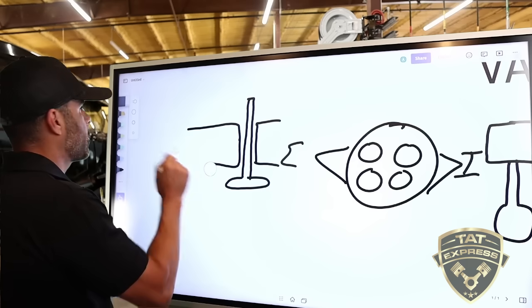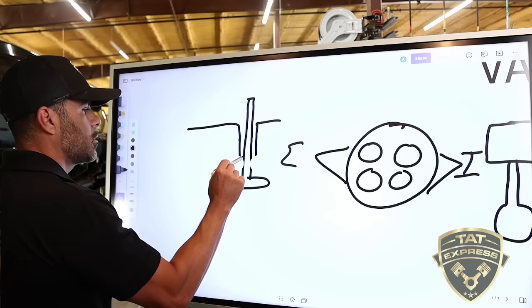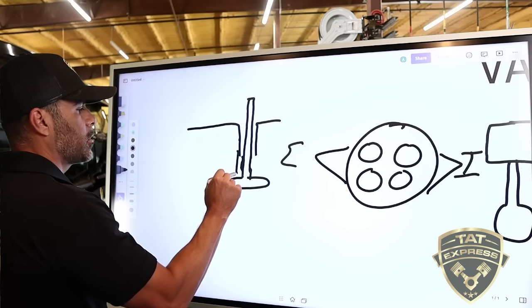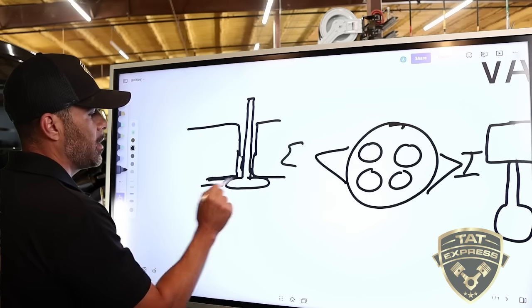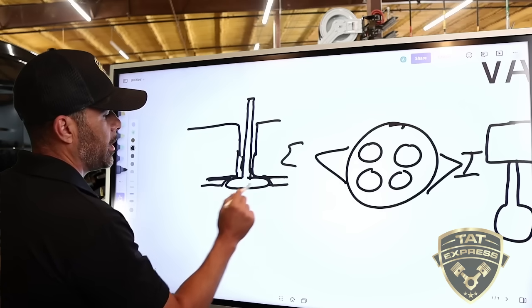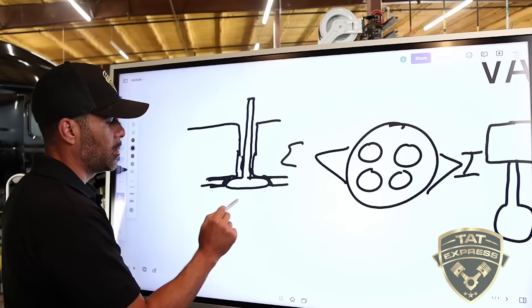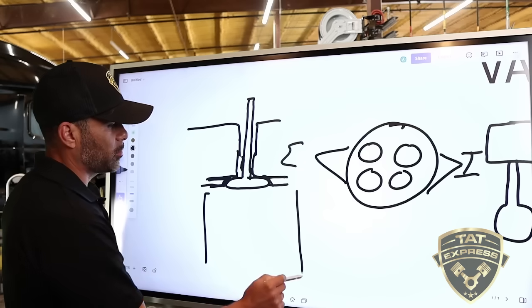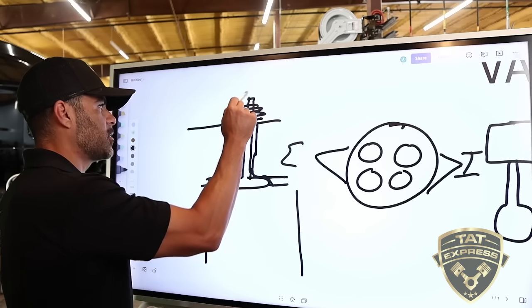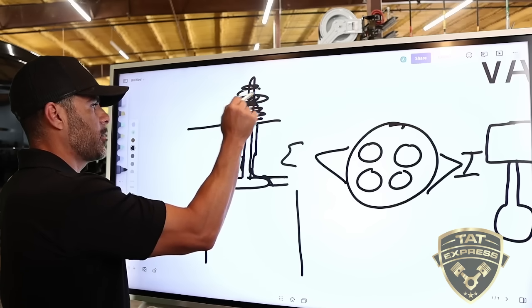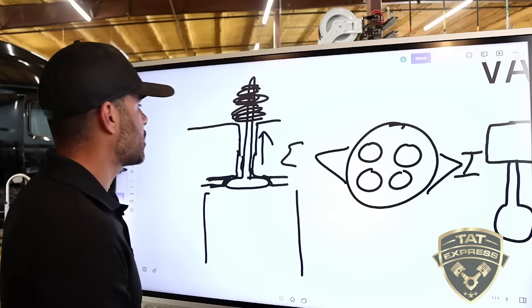Now, in a closed position, which is normally closed, these valves are normally closed. They're going to sit all the way against the head like this, and there's going to be a machined surface on the head that has the valve sitting there like this. So you can have a complete seal on what's going on here in the combustion chamber. So when it's closed, it's sealed.